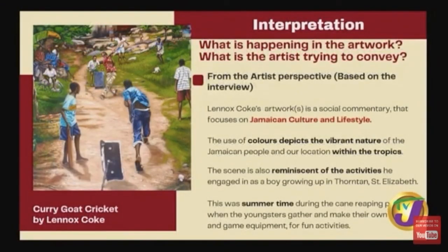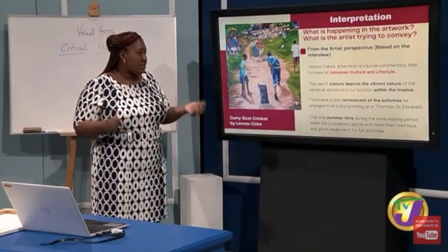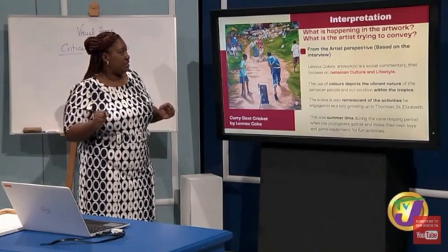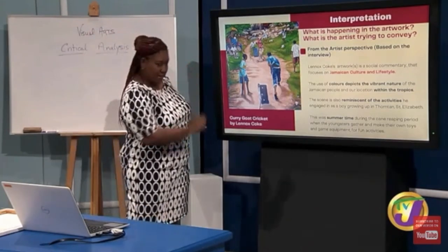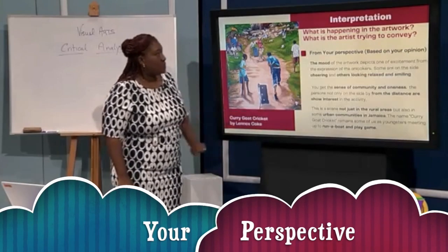Lennox Coke's artwork is based on social commentary on Jamaican cultural lifestyle. The use of colors depicts the vibrant nature of the Jamaican people — we are a colorful people, and being in the tropics, everything seems brighter in terms of color. The scene is also reminiscent of activities Lennox engaged in as a boy when he lived in Thornton, St. Elizabeth, where during the cane reaping period youngsters would gather, make their own toys and games, and enjoy activities within the community.